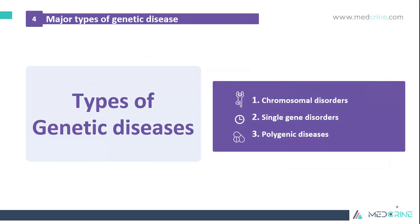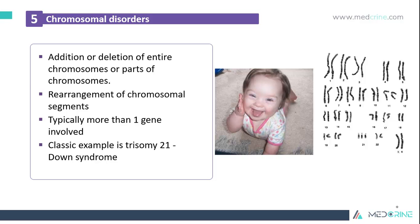The major types of genetic diseases can be classified into three main parts: chromosomal disorders, single-gene disorders, and polygenic diseases. With chromosomal disorders, we have addition or deletion of entire chromosomes or parts of chromosomes. We can also have a rearrangement of chromosomal segments, and typically more than one gene is involved. A classic example of chromosomal disorders is Down syndrome, or trisomy 21, where we have a triplication of chromosome number 21.